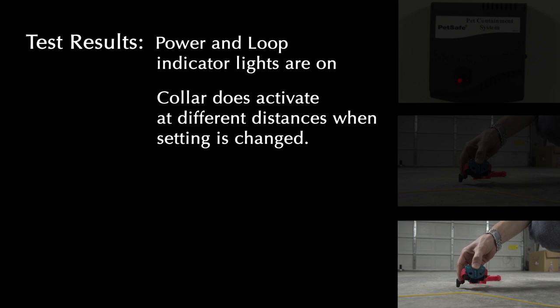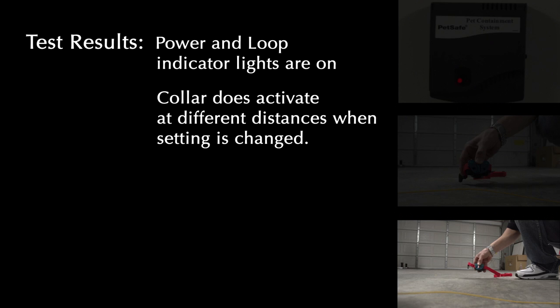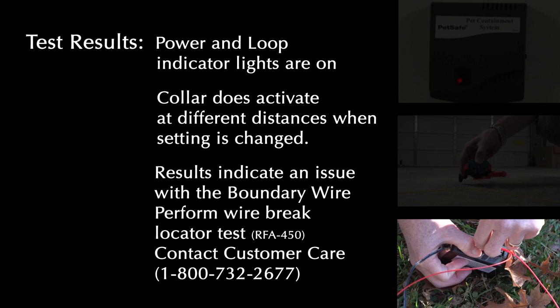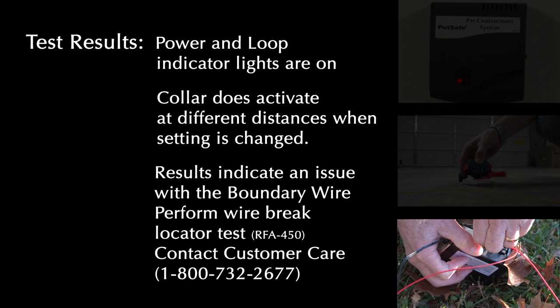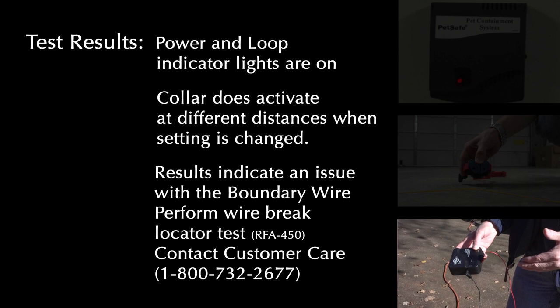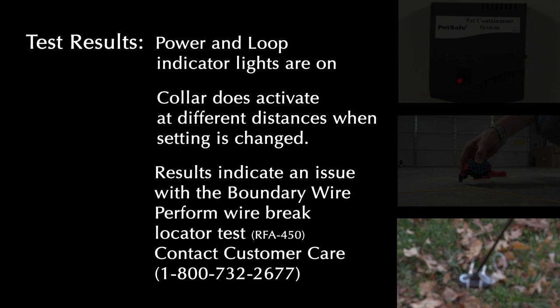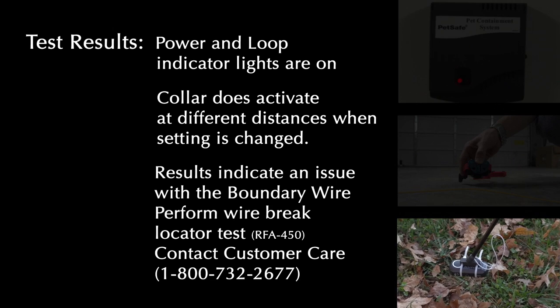Both the power and loop indicator lights are on and the receiver collar is activating at different distances on the test loop wire, the problem is in the containment boundary wire. You should perform the wire brake location test. We recommend the PetSafe wire brake locator model number RFA450 to locate brakes in the boundary wire.